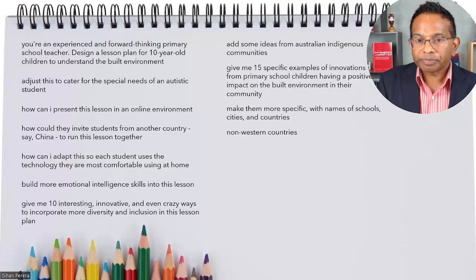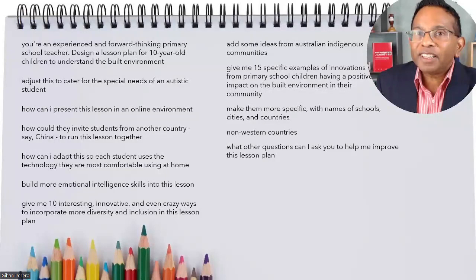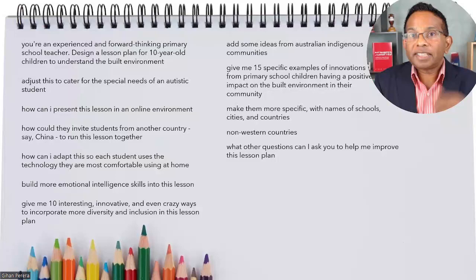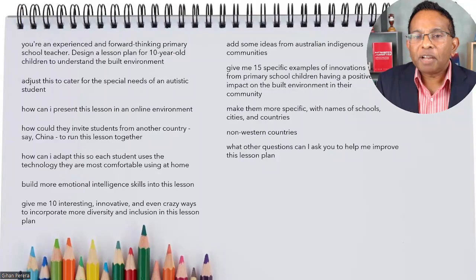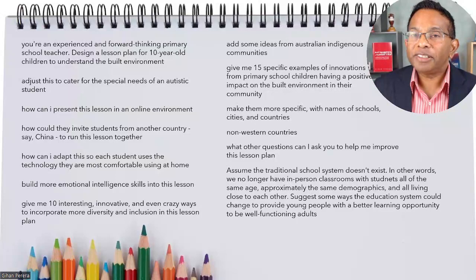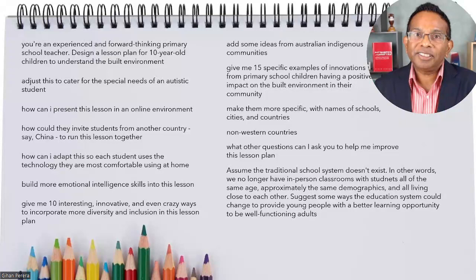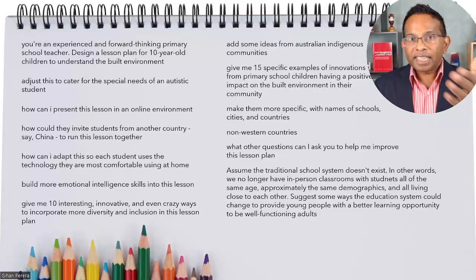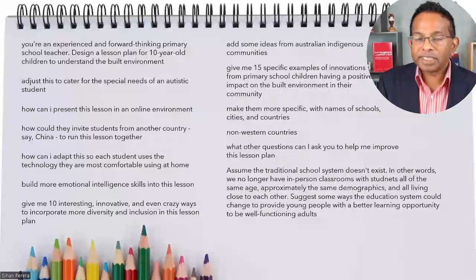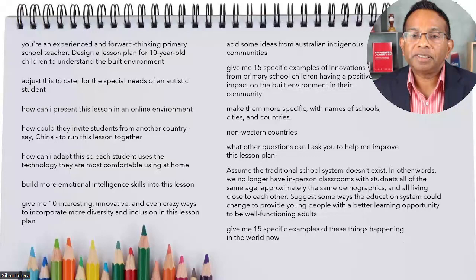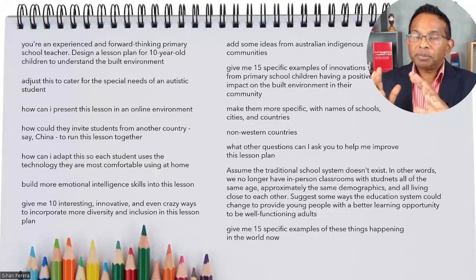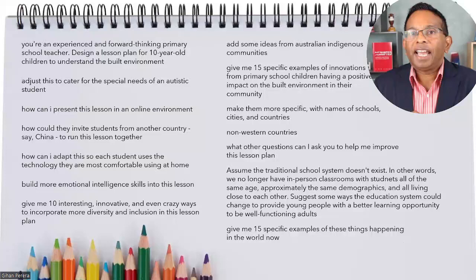You can even ask ChatGPT: what other questions can I ask you to help me improve this lesson plan? So you can ask ChatGPT to help you help yourself. We also went really broad and said: imagine the traditional school system doesn't exist — no more in-person classrooms with students of the same age and demographics living close to each other. What would you do? How would the school system be replaced? ChatGPT came up with several alternatives. The final example was: give me some examples of how this is already happening in the real world. These were independent schools with quite a lot of agency over how their school runs, keen to see what they could do to make education better within the constraints of the school curriculum.